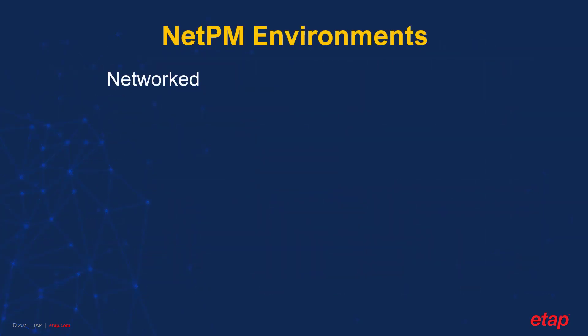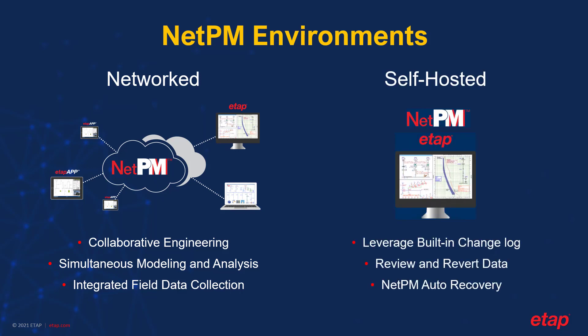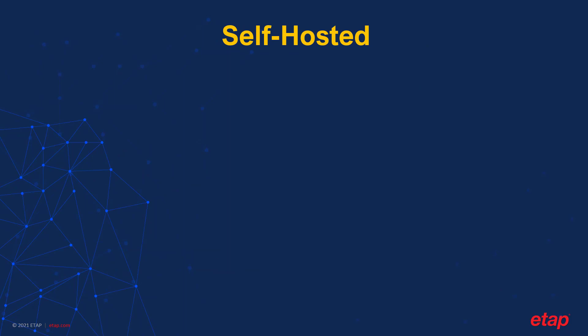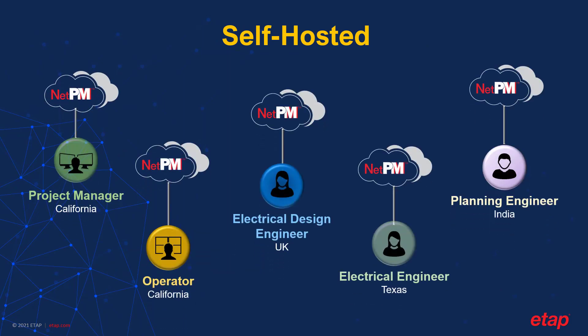As the name suggests, NetPM was primarily intended for networking ETAP projects together. To do this, the incremental changes to each project must be logged and managed in the NetPM server. Conveniently, this log can also be leveraged for standalone or self-hosted applications to help clarify modifications that were previously made to the project. For self-hosted environments, NetPM can simply be installed locally on the same PC running ETAP, and the incremental changes for each uploaded project are then maintained on the local machine.